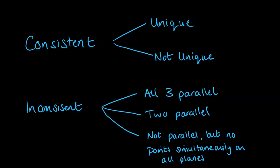So to recap, we can either have consistent equations where we can get a unique solution or not unique solutions or inconsistent where we don't get solutions and they are either all three are parallel or two of the planes are parallel or the planes aren't parallel, but there's no point simultaneously on all three planes.